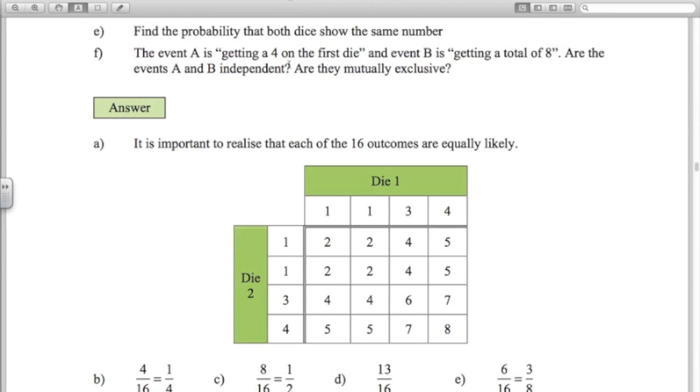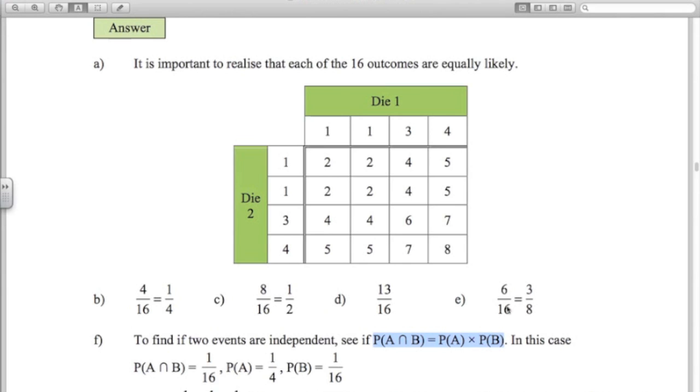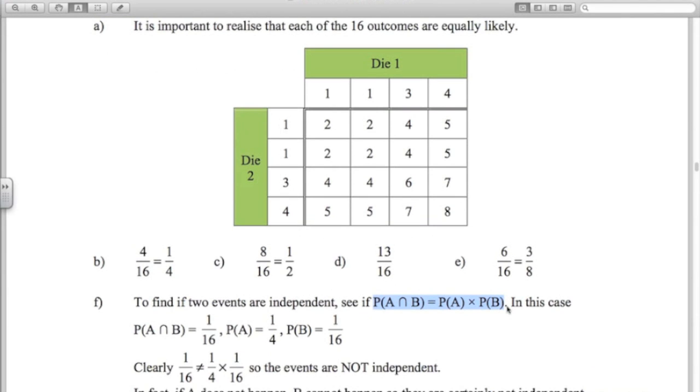The probability of A getting a 4 on the first dice is clearly 1 out of 4. We've got a one-quarter chance just rolling the first dice. What's the probability of getting a total of 8? Looking at our table now, there's a 1 out of 16 chance of getting a total of 8. Put all that together. Does 1 16th equal 1 quarter times 1 16th? No. Therefore, the events are not independent.